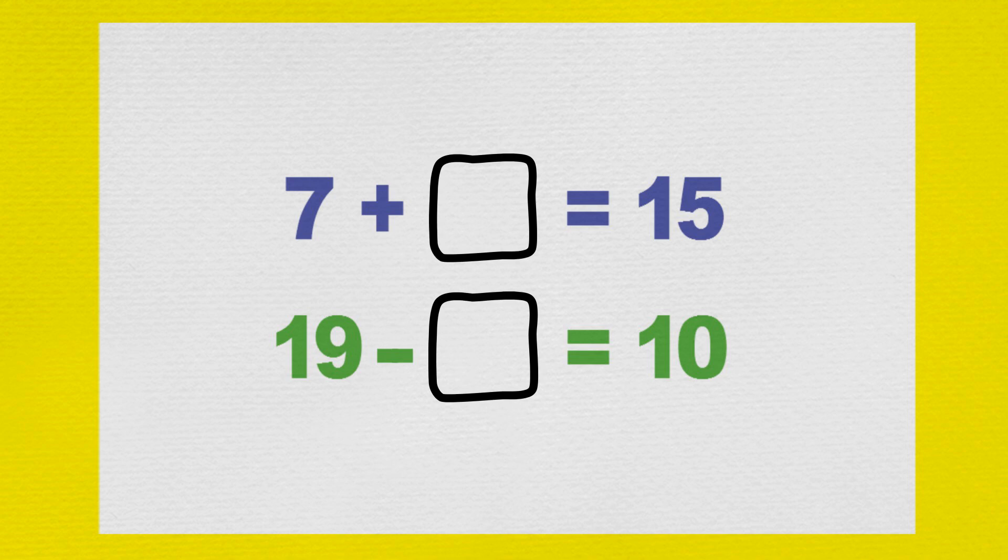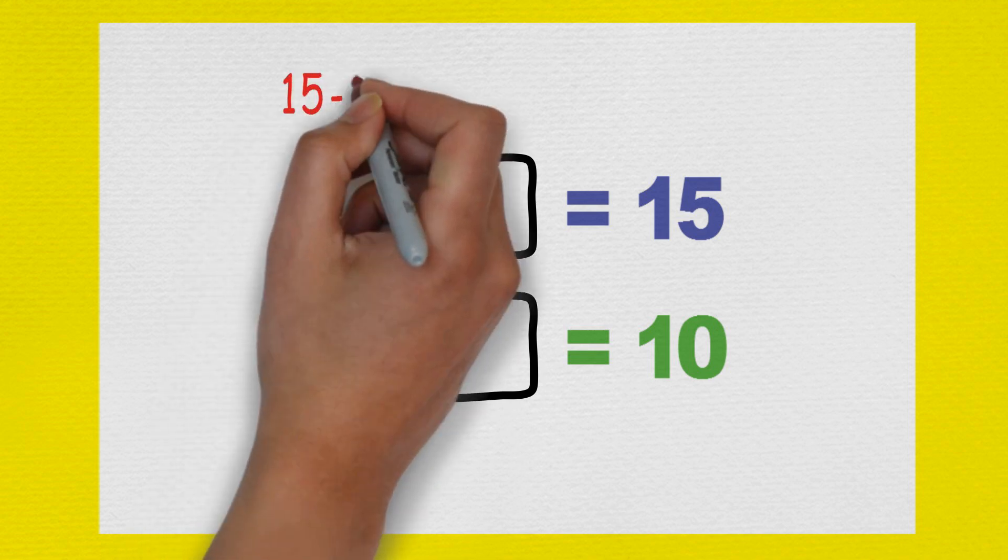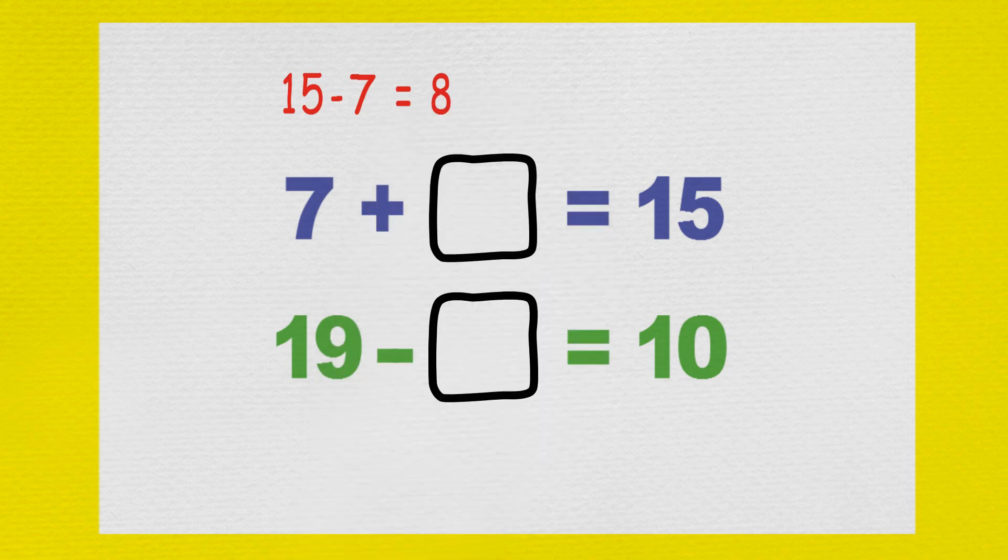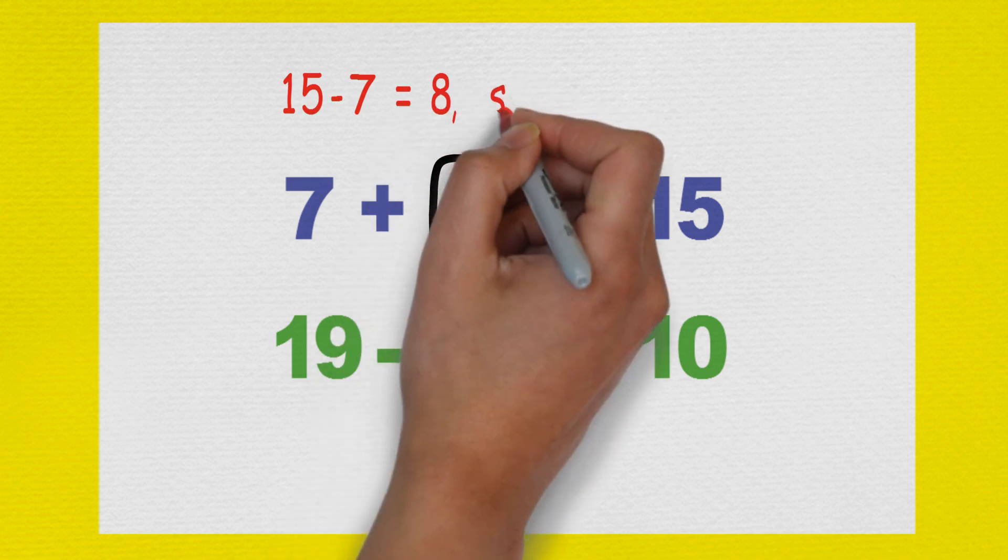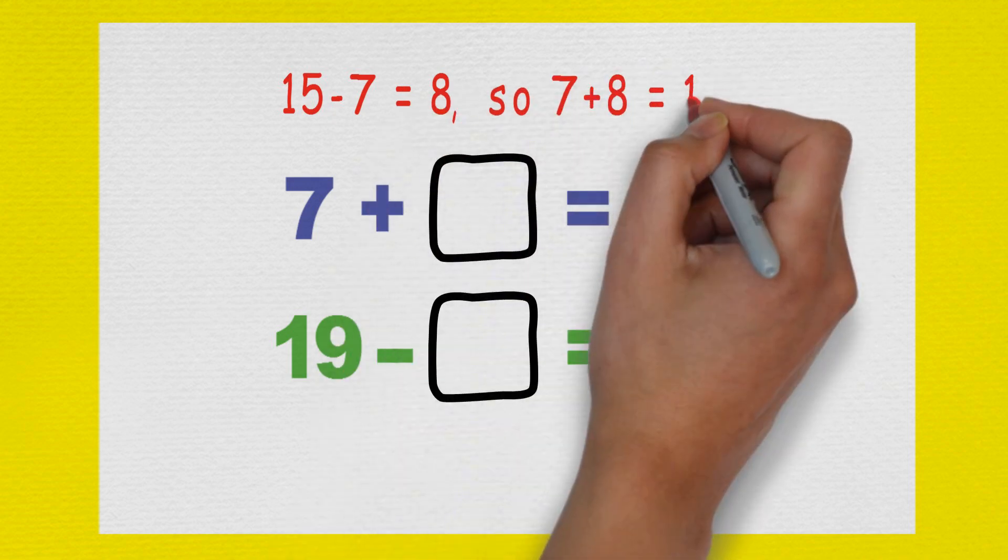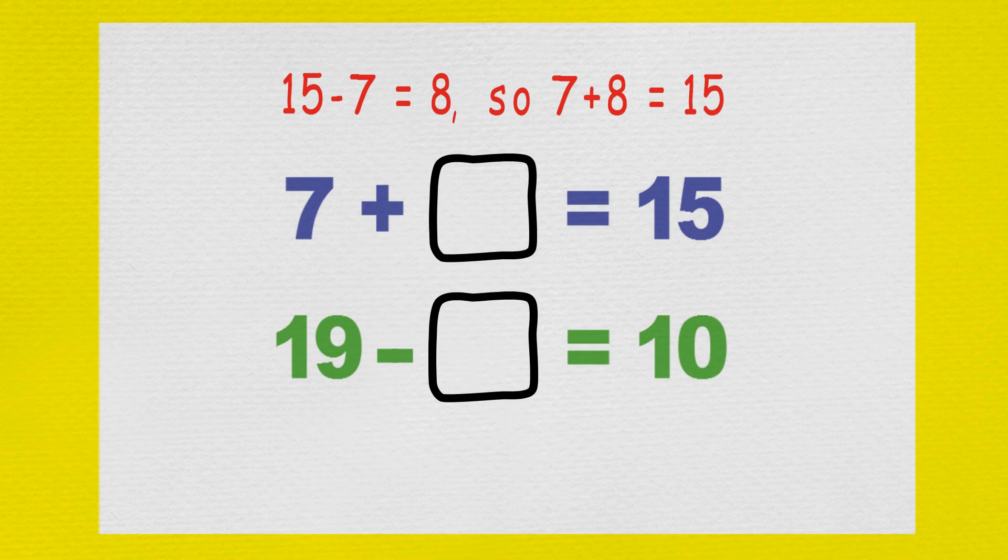Max looked at the first number sequence and told the alien what he was thinking. I know that fifteen minus seven equals eight, so therefore, seven plus eight must equal fifteen, so the value of the box in the first number sentence must be eight.